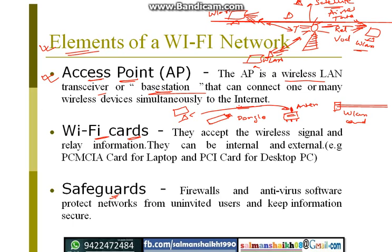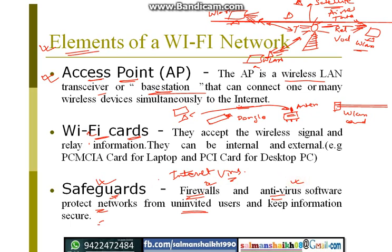The third point: in order to safeguard the network, you need to have some firewall or antivirus software to protect the network from uninvited users and keep the information secure. There is a lot of harm on the internet — many people try to access your PC without your permission and try to put viruses inside your PC, so you need firewalls as well as antivirus software.